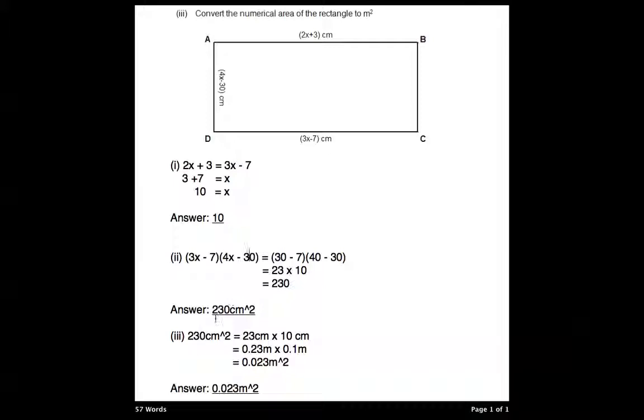So first, we know that 230 cm squared equals 23 cm times 10 cm, which is quite straightforward. Now we change it to meters. So 1 meter is 100 cm, so 1 cm is 0.01 meters. So 23 cm equals 0.23 meters and 10 cm is 0.1 meters.